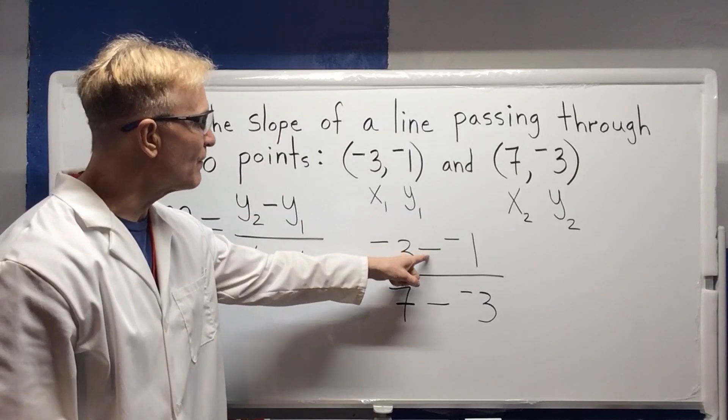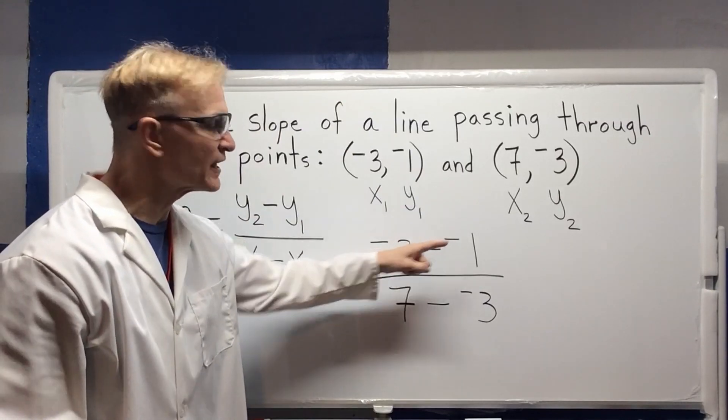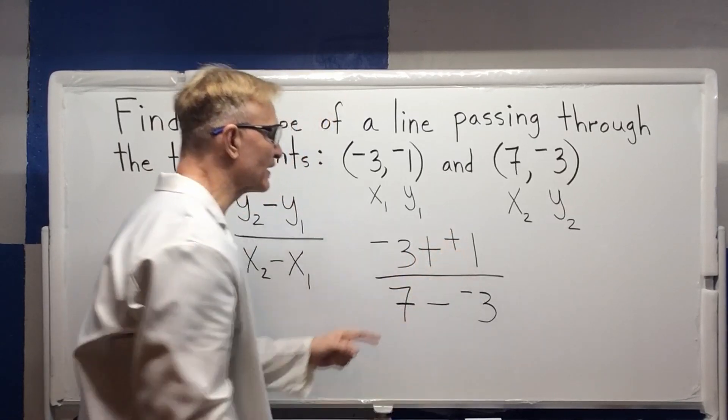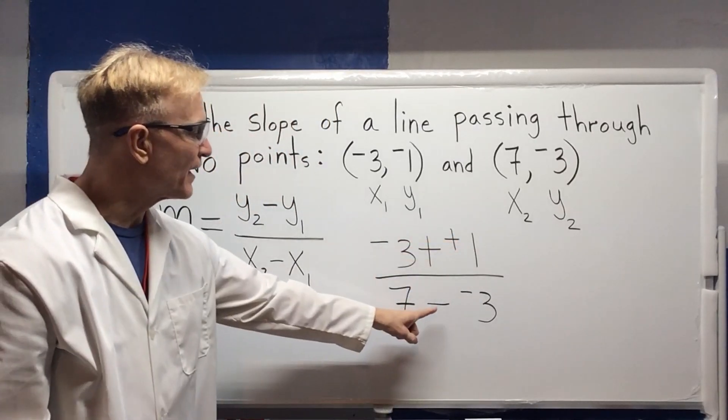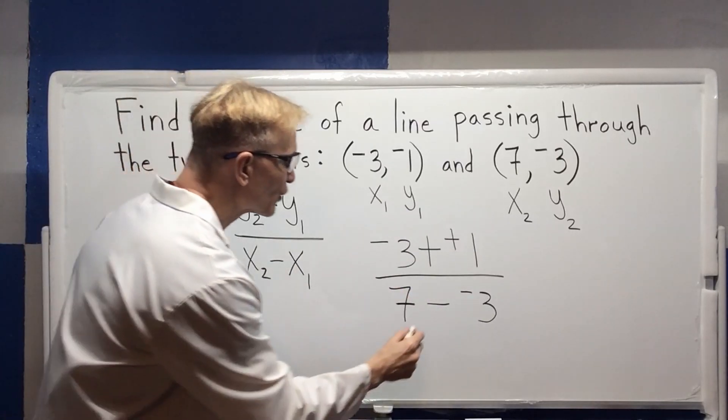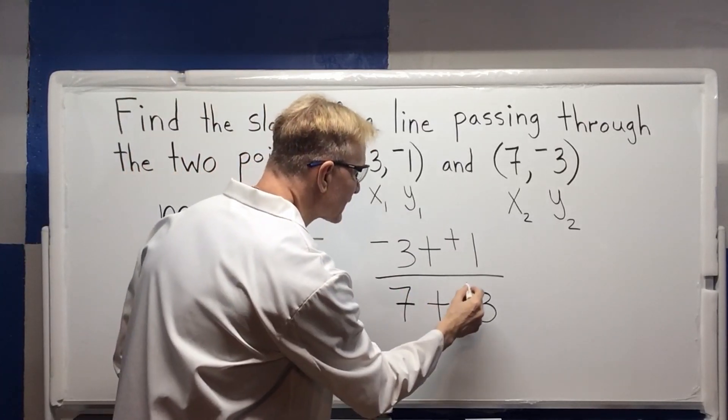Looking at this, I have a minus and a minus. So a negative times a negative is a positive. So I can change this to plus positive 1. Another one down here, negative times a negative is a positive. So we'll put this plus plus.